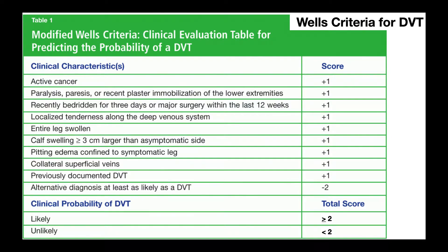In this video we're going to be discussing the Wells criteria for deep vein thromboses, or DVTs. There is also a separate Wells criteria for pulmonary embolisms, so if you're dealing with those you'll have to look up a separate table. This one is specific for DVTs, so let's dive right into it.